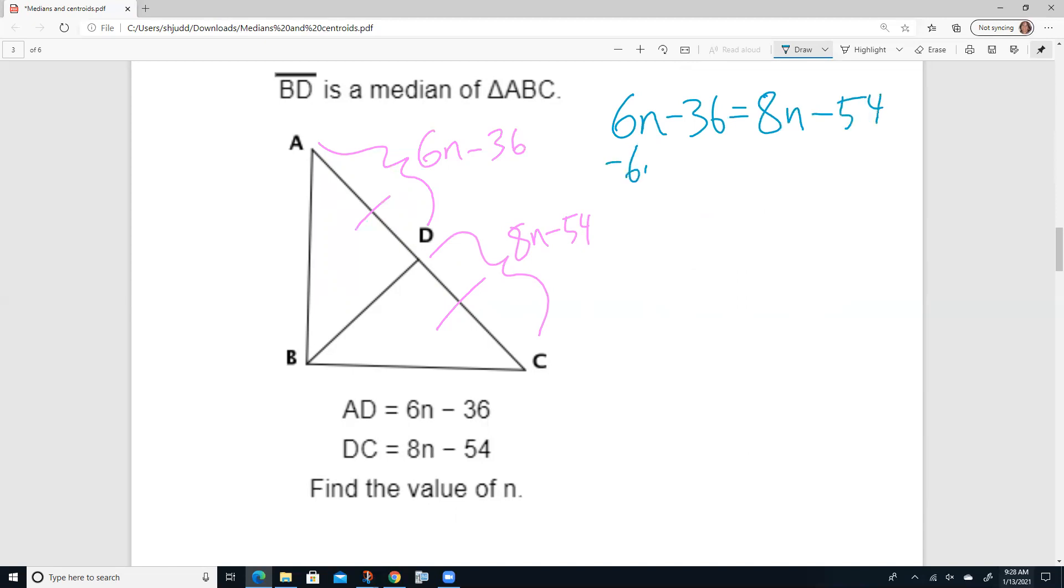Minus 6n from each side. I'll get negative 36 is equal to 2n minus 54 plus 54. Negative 36 plus 54 is 18. Divide by 2. And n is equal to 9.